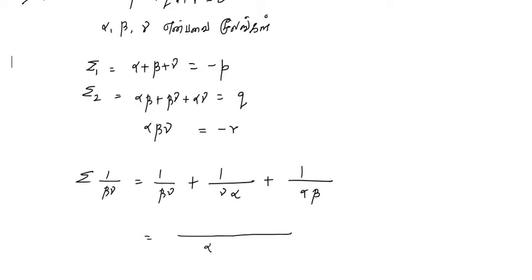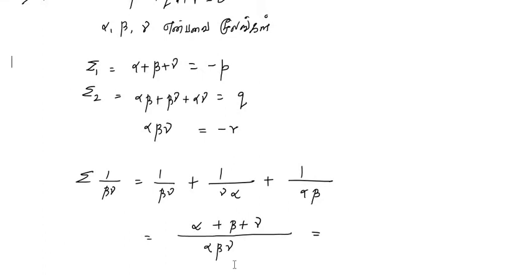In the denominator we have alpha·beta·gamma. Alpha·beta·gamma is common. So we can simplify: 1/(β·γ) plus 1/(γ·α) plus 1/(α·β) equals (alpha plus beta plus gamma) divided by (alpha·beta·gamma).